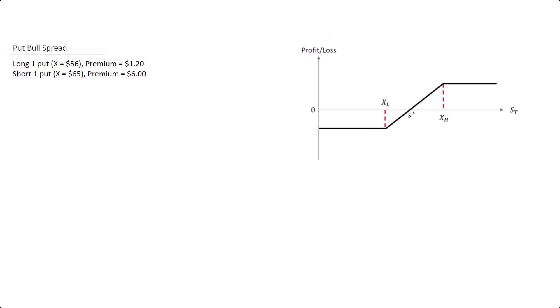In my example, the put option we will buy has a strike of 56 — this is the lower strike — and the short put has a higher exercise price of 65. The respective premiums are $1.20 for the lower strike put and $6.00 for the higher strike put.